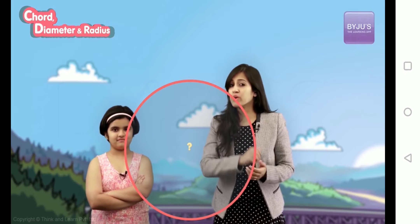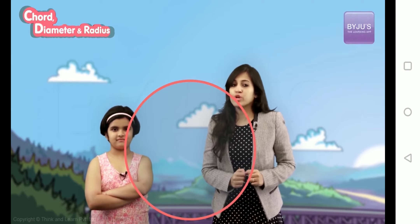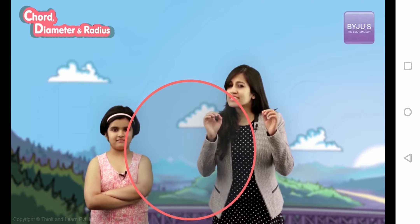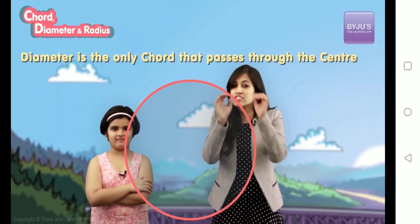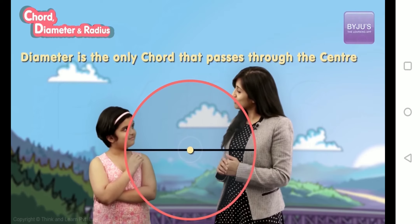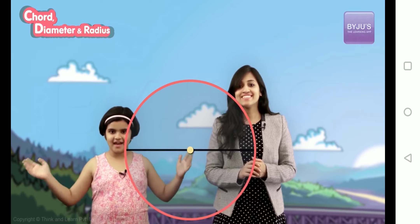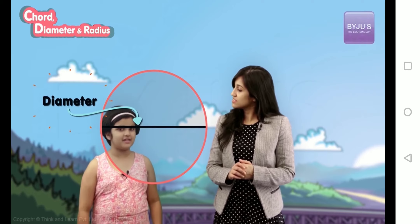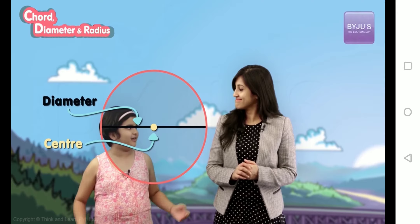Now that you understand this really well, if we were just given the circle, how do you find the center point? Here's a clue: we just learned that the diameter is the only chord that passes through the center. Can you make use of that? Yes! So if I drag the chord up and get the longest chord, this is my circle's diameter. Then the midpoint of this diameter is the center.